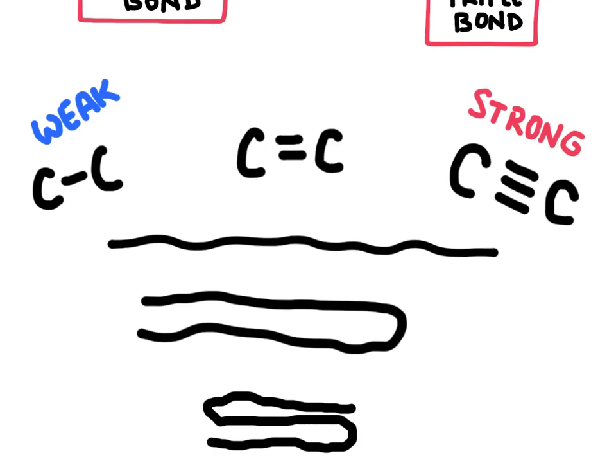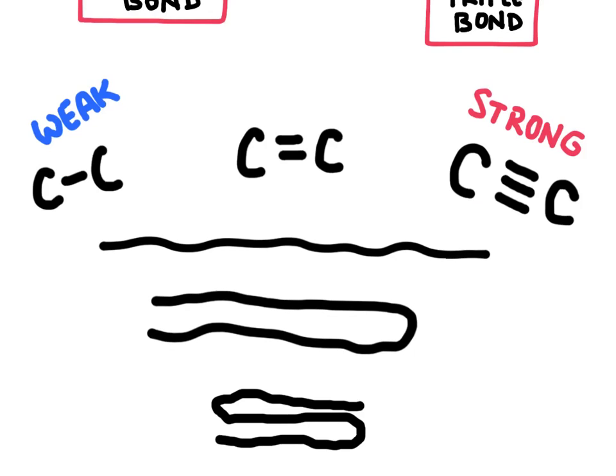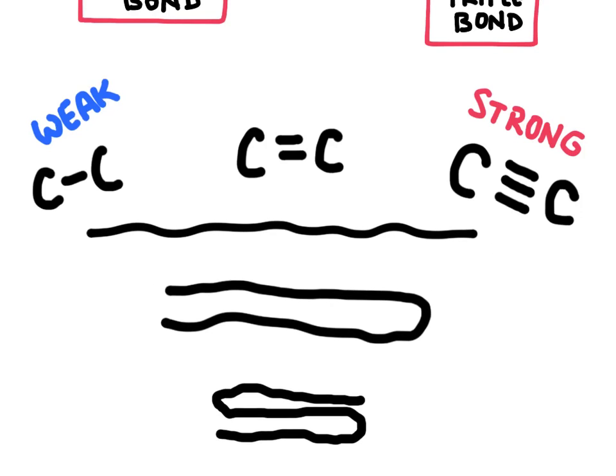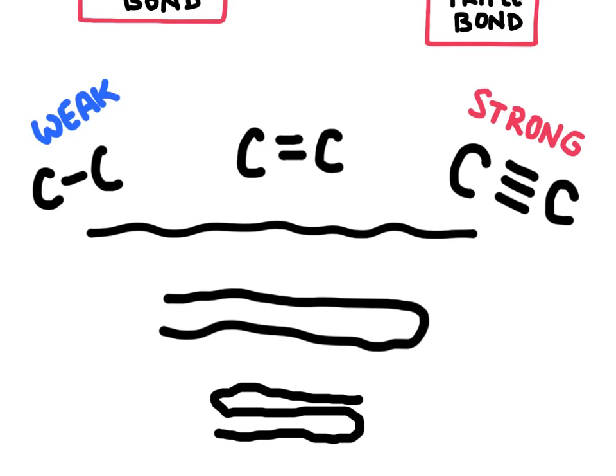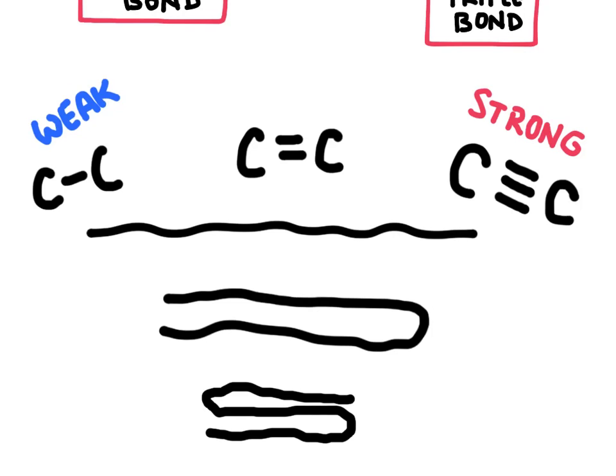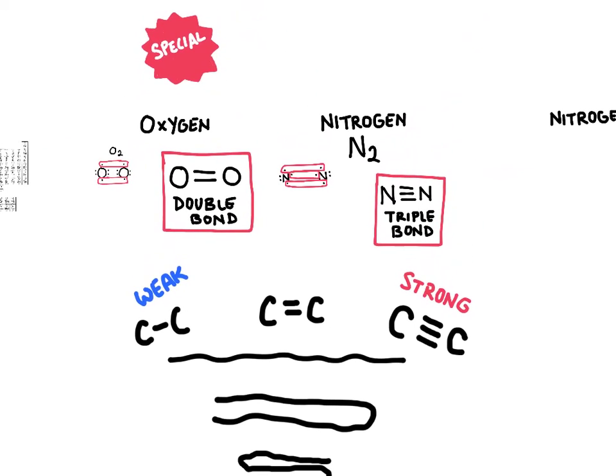And as you could probably see here, it would also get shorter. So a single bond is actually the longest bond. A double bond is a little bit shorter, and then a triple bond is the shortest of all the bonds. It's the strongest, but it's also the shortest. And that's two special covalent bonds, double and triple bonds.